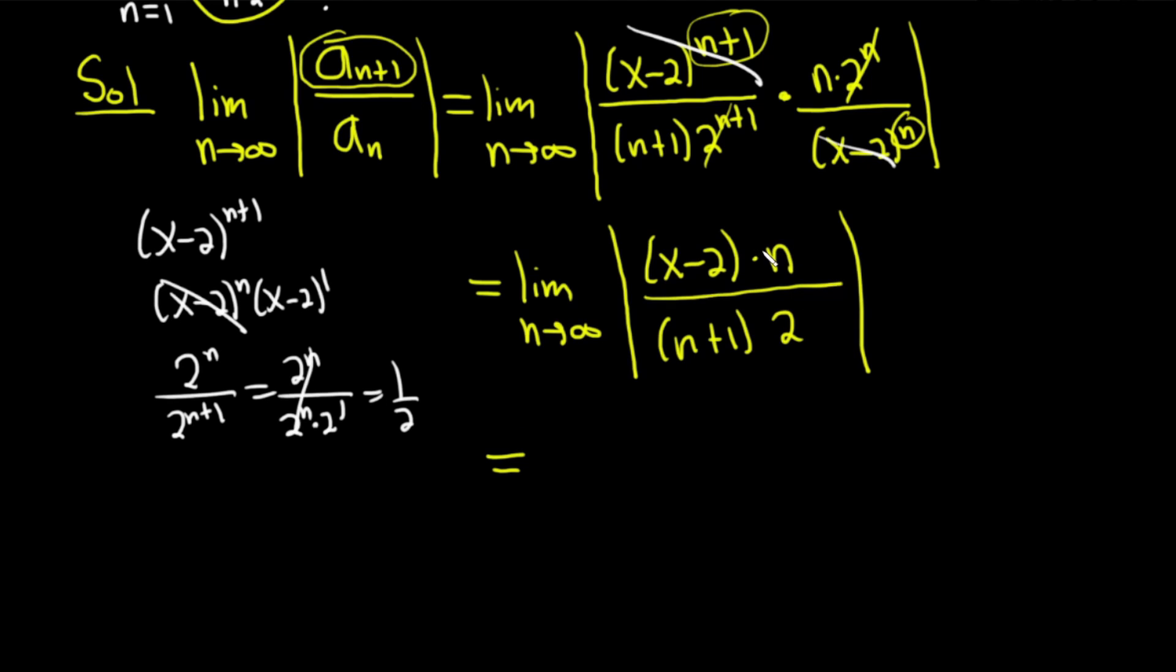We're taking the limit as n goes to infinity, so we look at the leading coefficients. Here the leading coefficient of n is 1, and down here it's 2. So this limit approaches 1 over 2. The absolute value stays on the x minus 2, so we have 1 half absolute value x minus 2.